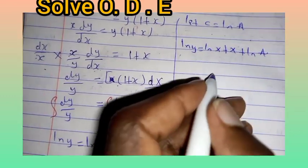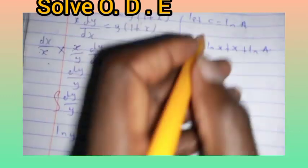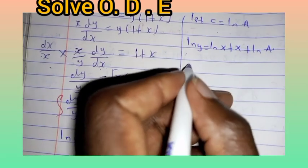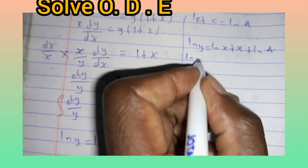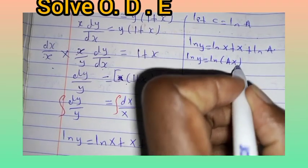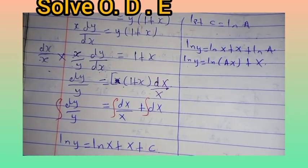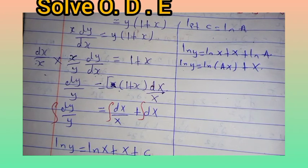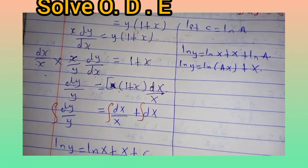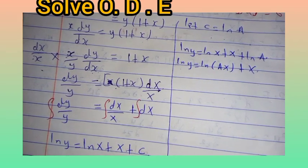Using the laws of logarithms on the right-hand side, we can combine ln(x) and ln(a) to get ln(ax). So we have: natural logarithm of y equals natural logarithm of ax plus x.